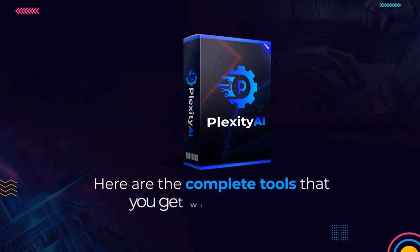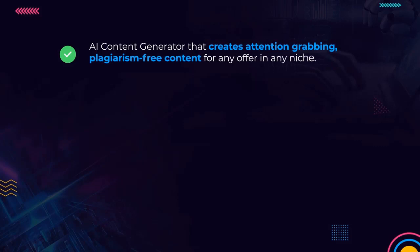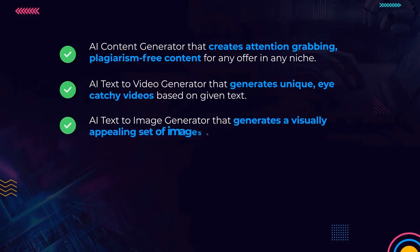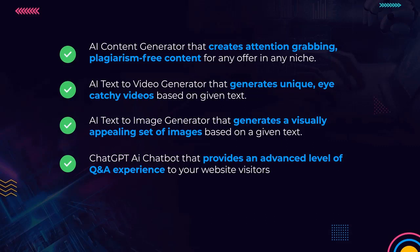Here are the complete tools you get with Plexity AI. An AI content generator that creates attention-grabbing, plagiarism-free content for any offer in any niche. An AI text-to-video generator that creates unique, eye-catchy videos based on given text. An AI text-to-image generator that produces visually appealing images based on given text. A ChatGPT AI chatbot that provides an advanced Q&A experience to your website visitors.